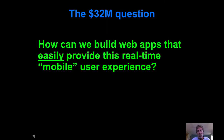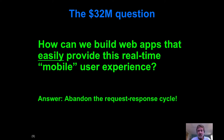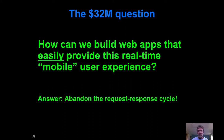So here's the big question: how can we build web apps that easily provide reactivity — this kind of real-time user experience that is the de facto standard for mobile apps — except in a web application development scenario? The answer the Meteor folks came upon was: we've got to get rid of the request-response cycle. We can actually start to think about building web apps that have the same properties as mobile apps, which opens up the possibility of cross-platform development with one code base that works as a mobile app and on the web.